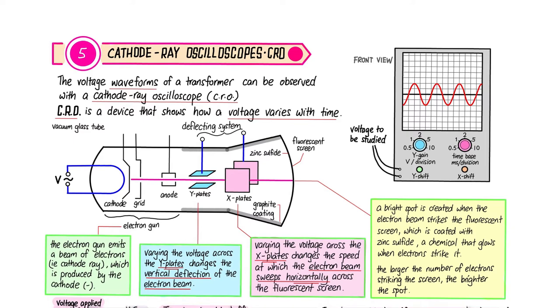That's why they're called the Y plates, even though the plates are placed horizontally. Next, for the X plates, or sometimes you call it the time base, this is responsible for sweeping the electron beam from left to right. Both will be supplied with a varying voltage.